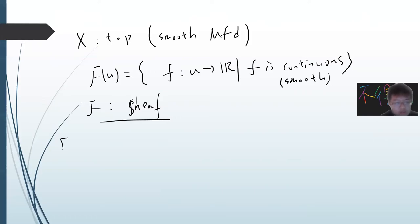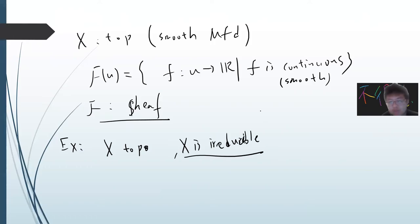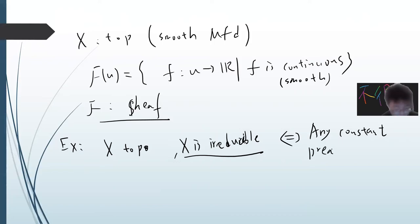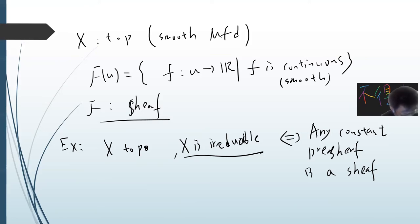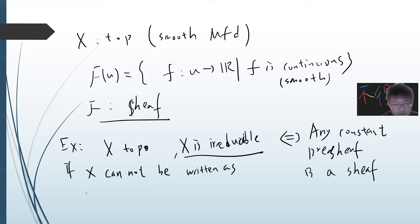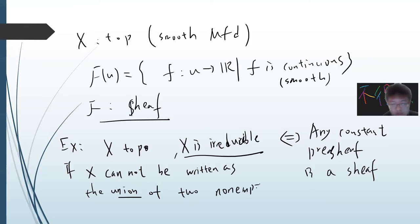There is also a notable fact: if X is a topological space and X is irreducible — meaning X cannot be written as the union of two non-empty closed subsets — then any constant pre-sheaf is a sheaf.